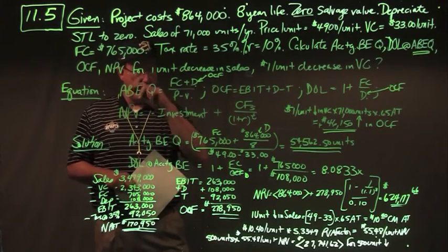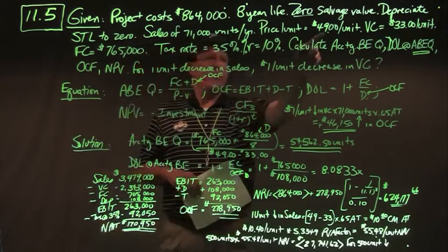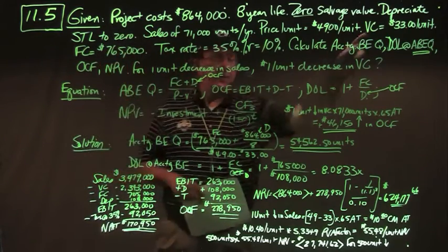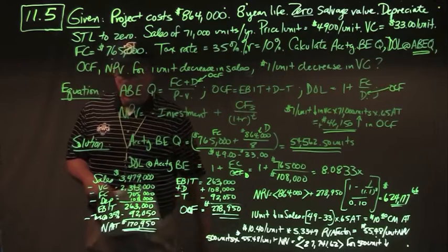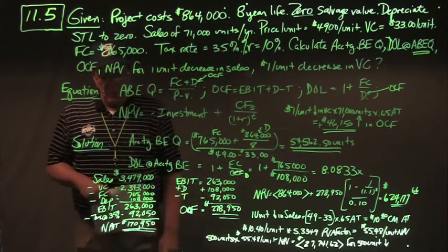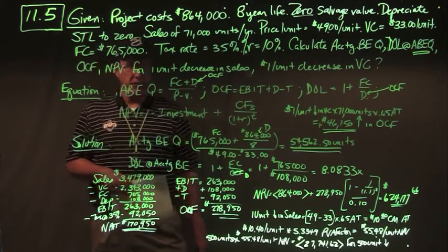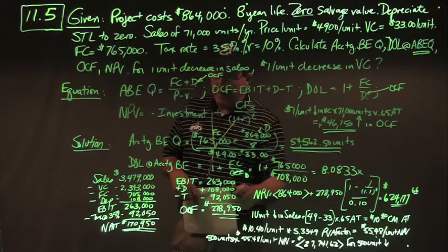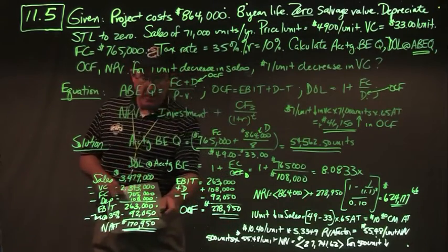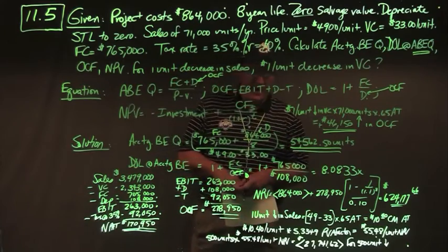For the base case OCF, we build an income statement: sales of 71,000 units times $49 equals $3,479,000; variable cost 71,000 times $33 equals $2,343,000; fixed costs $765,000; depreciation $108,000; giving EBIT of $263,000. Taxes at 35% equal $92,050; net income $170,950. OCF equals EBIT plus D minus taxes: $263,000 plus $108,000 minus $92,050 equals $278,950 per year for 8 years.